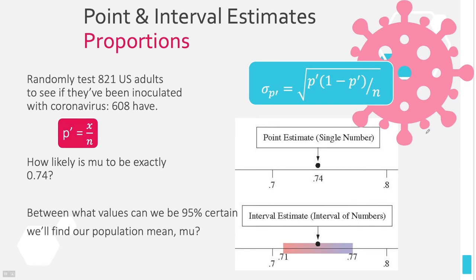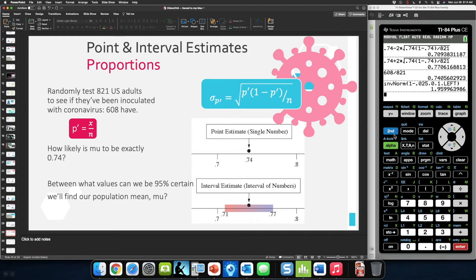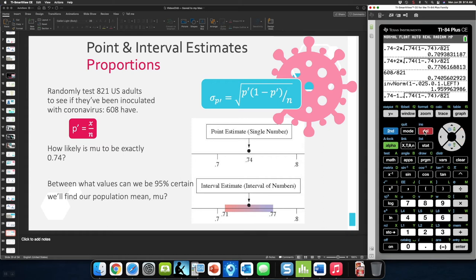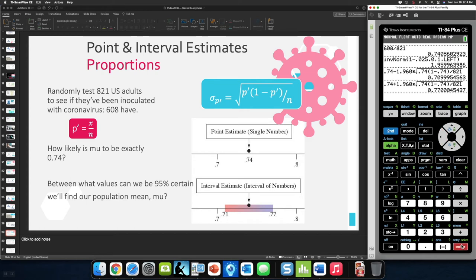Let's do the example the faster way using 1-PropZInt. We go to stat, then scroll right to test. Everything we'll use in chapters eight and nine will be in that test area. We want 1-PropZInt, which you can find by scrolling or pressing alpha A. Our x — number of successes — is 608. Our n is 821. Our confidence level is 95%. And we're finished. The result is 0.71 to 0.77, or more precisely 0.711 to 0.771 at three significant digits.